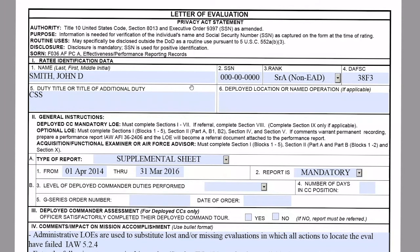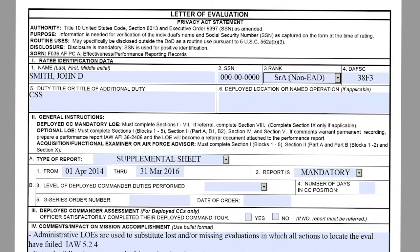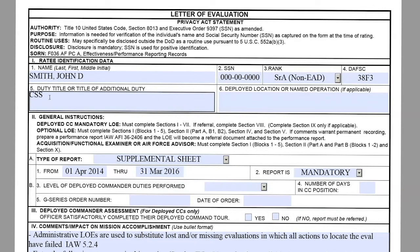Starting with section one: block one, input the ratee's name; block two their social; block three their rank; block four their duty FSC. Block five will be their duty title or title of additional duty from that specific report you are replacing — this can also be found in the member's MILPDS if it's closed out. Block six will be left blank if not applicable.